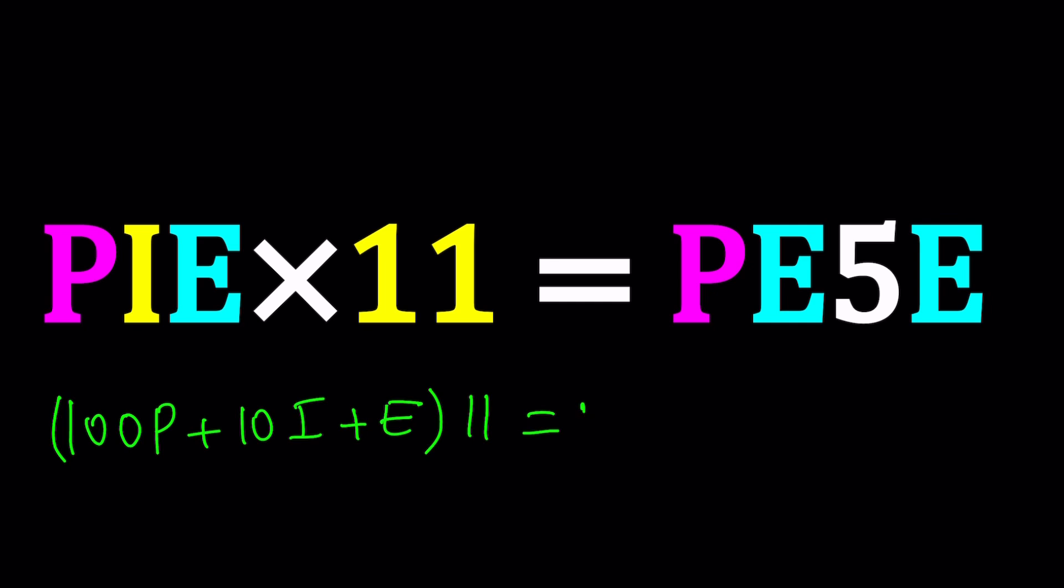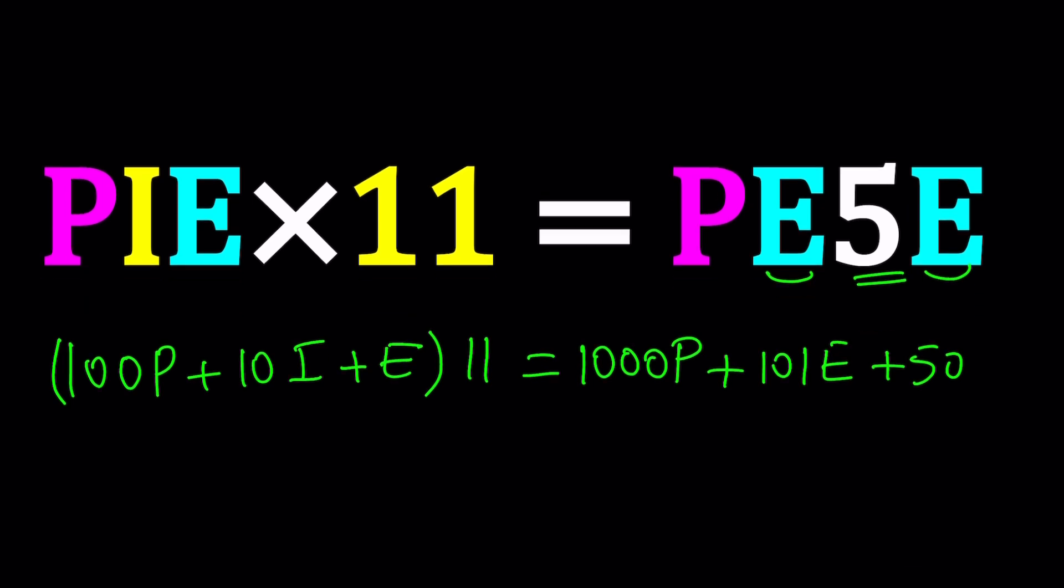So that's going to be 1000P plus 101E plus 50. Don't forget this is not a 5, that's a 50 because it's in the tens digit, right? Let's go ahead and distribute and see what we can do with an equation like this.